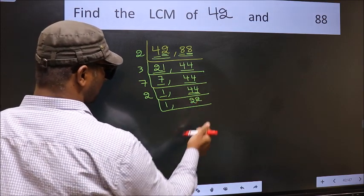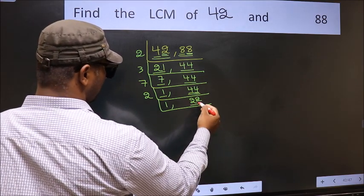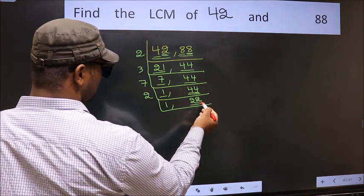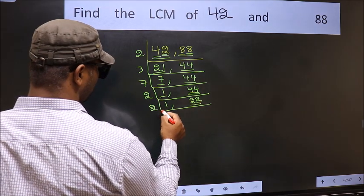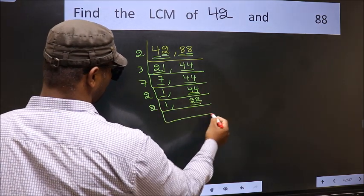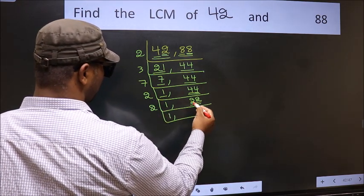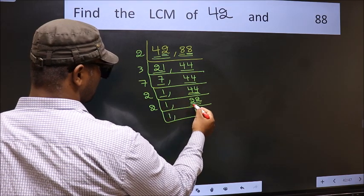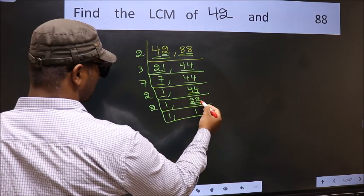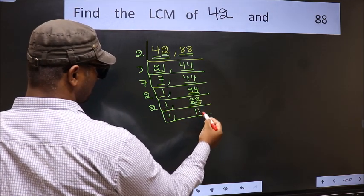Now here we have 22. The last digit is 2, so take 2. The first number is 2 — when do we get 2 in the 2 times table? 2 ones are 2. The other number is 2 — when do we get 2 in the 2 times table? 2 ones are 2.